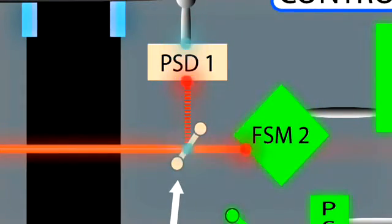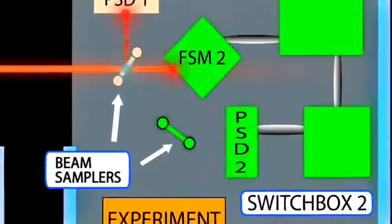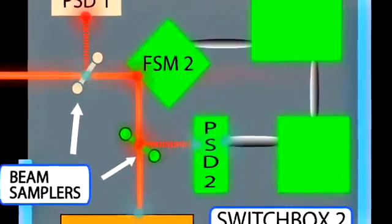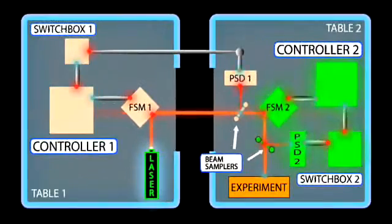Continuing on, the beam reflects from fast steering mirror two. Again, a small portion of the beam is sampled and directed to a second position sensing detector, while the remainder of the beam continues on to the experiment. The signal from the second position sensing detector is routed to the controller of fast steering mirror two, which corrects for any remaining pitch and yaw.